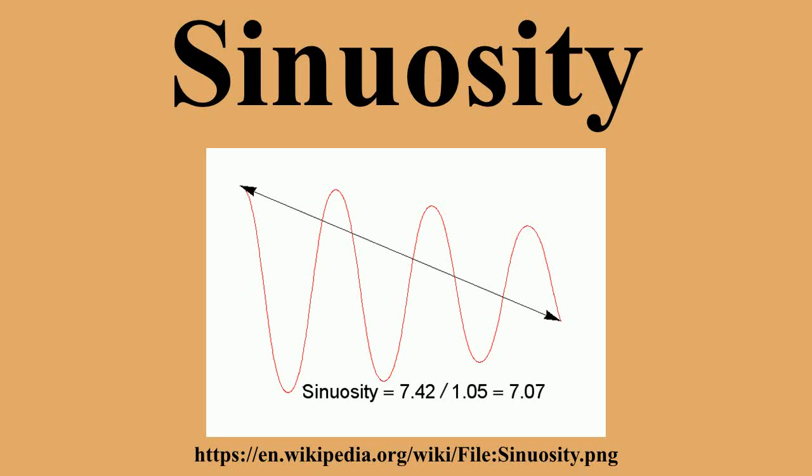Sinuosity, or sinuosity index, or sinuosity coefficient of a continuously differentiable curve having at least one inflection point, is the ratio of the curve's linear length and the Euclidean distance between the end points of the curve. This dimensionless quantity can also be rephrased as the actual path length divided by the shortest path length of a curve. The value ranges from 1 to infinity for an infinitely long actual path.